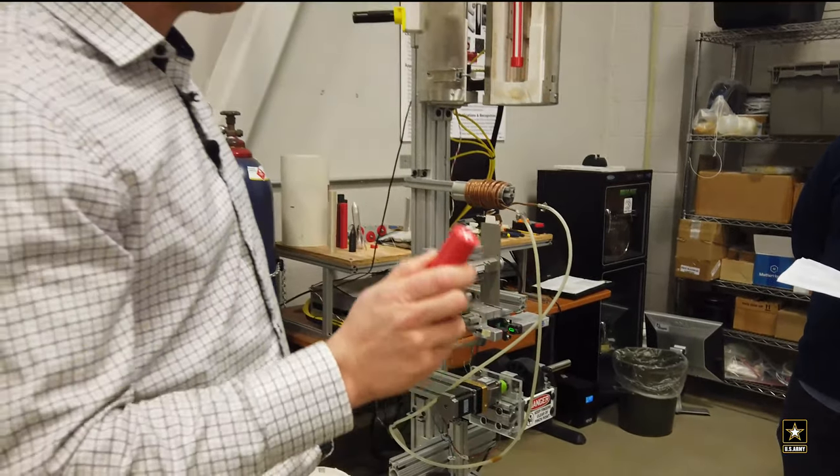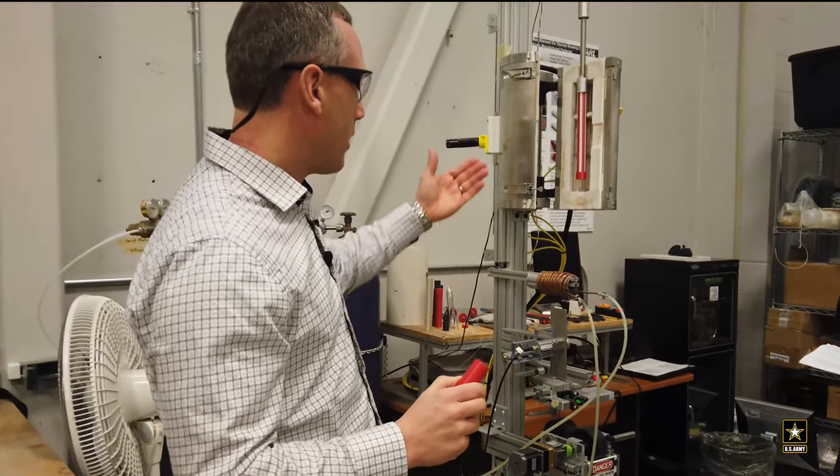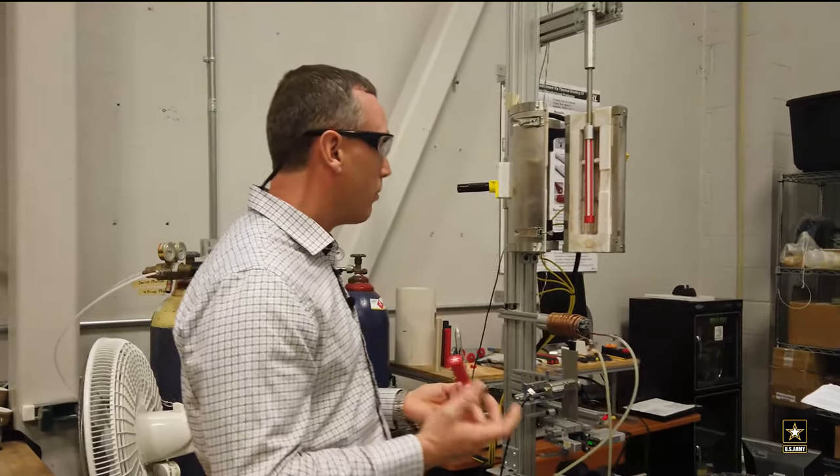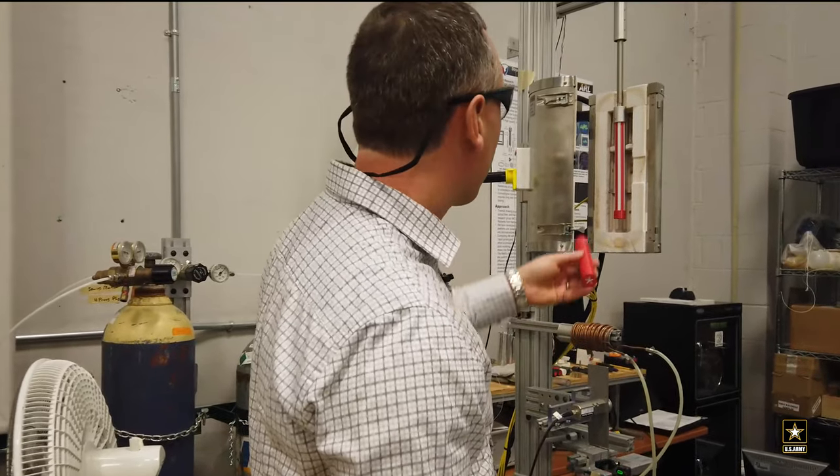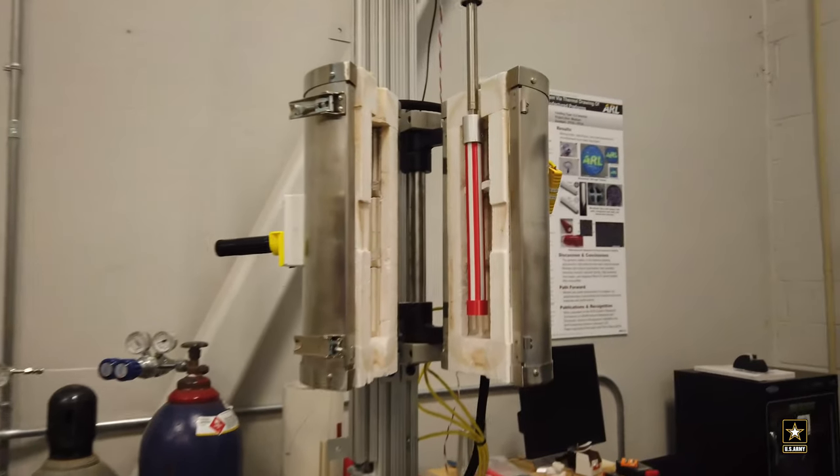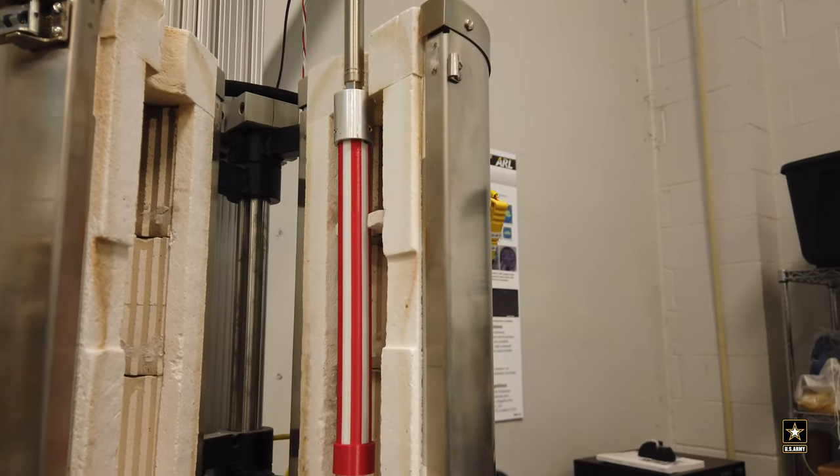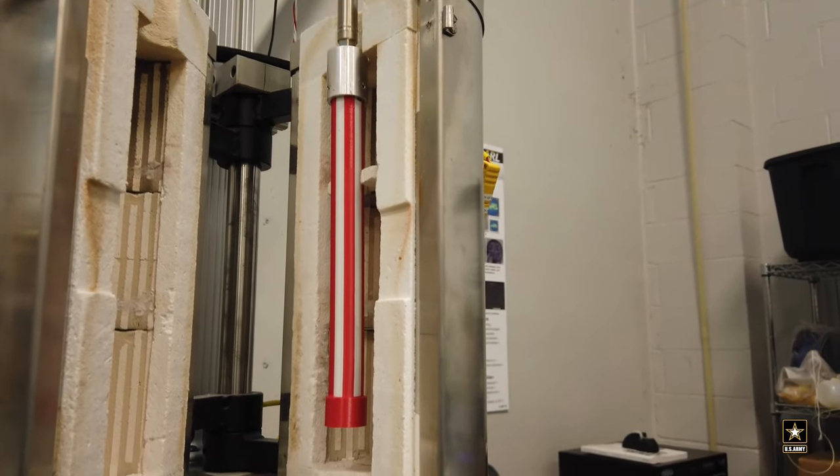Then we actually convert this back into filament. We use a thing here called a thermal draw tower that we built. This preform gets mounted in this feed head here. The feed head pushes the filament down at a very slow rate.